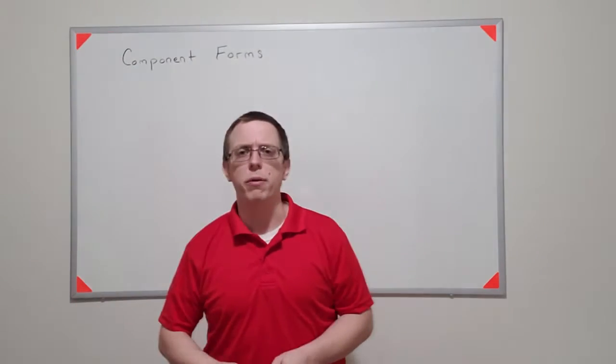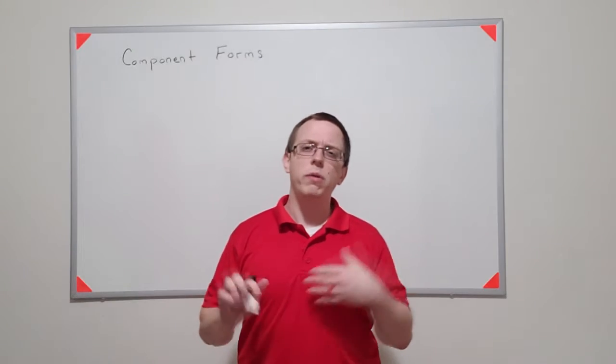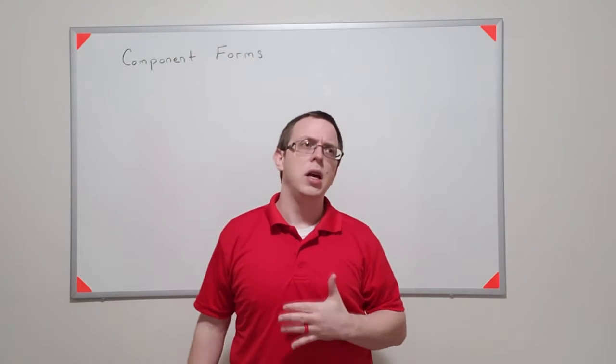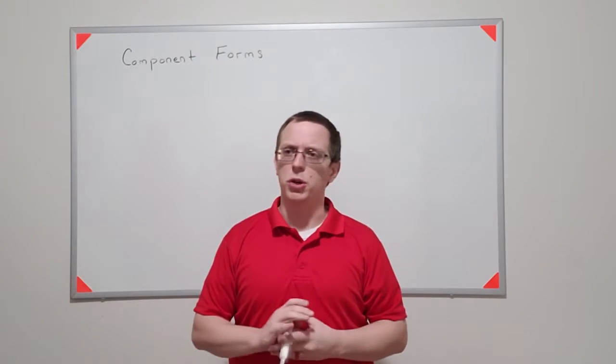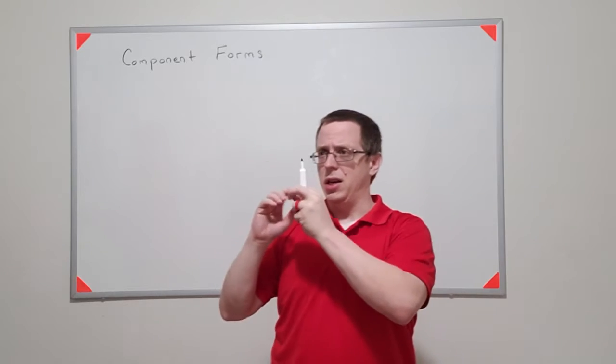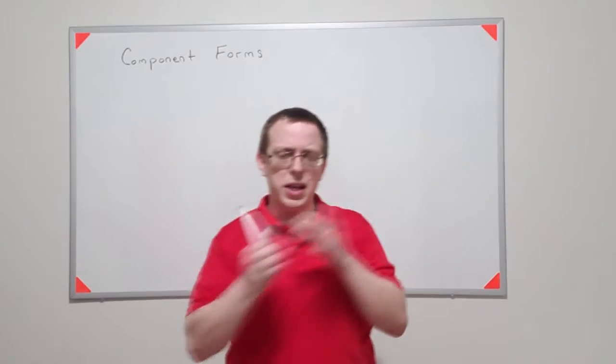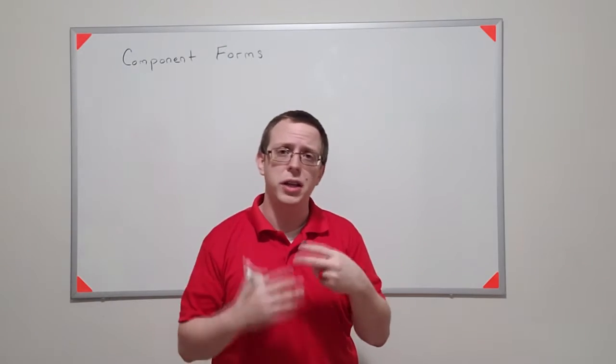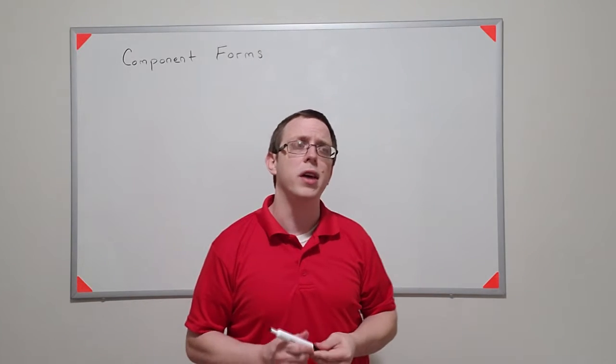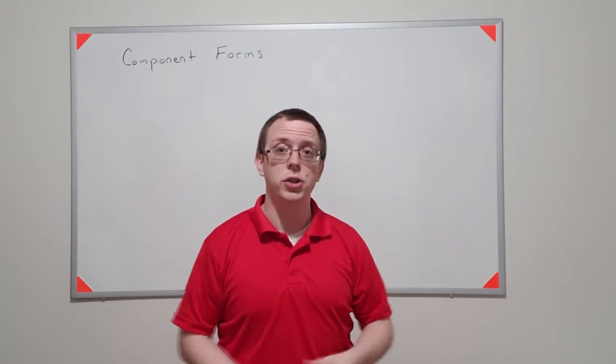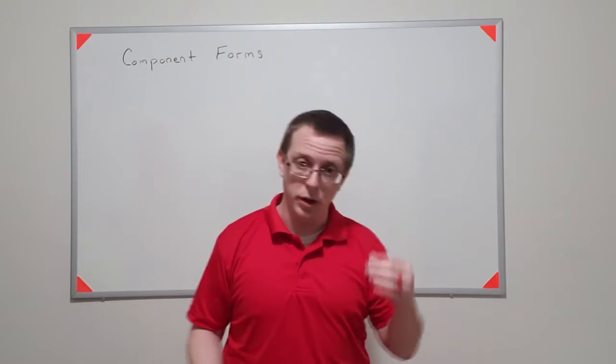We want to talk a little bit about component forms of vectors. When we dealt with directed line segments it can be kind of cumbersome because you have to think about the starting point and the ending point, and in two dimensions that's four different coordinates you have to keep up with. And as the dimensions increase you just get more and more to deal with.